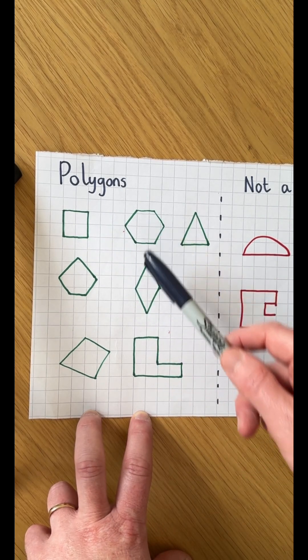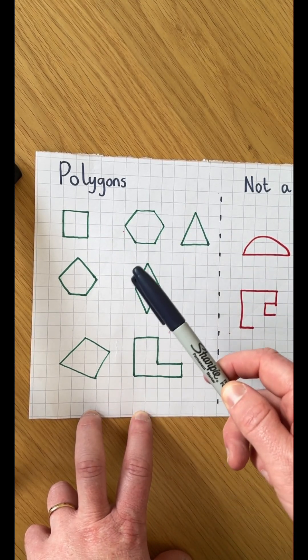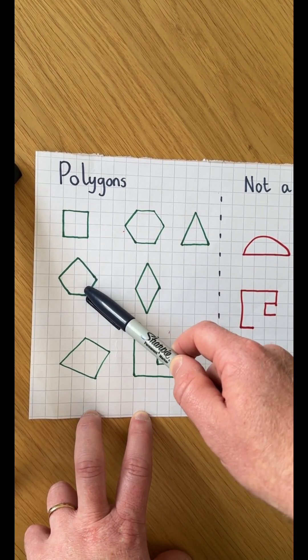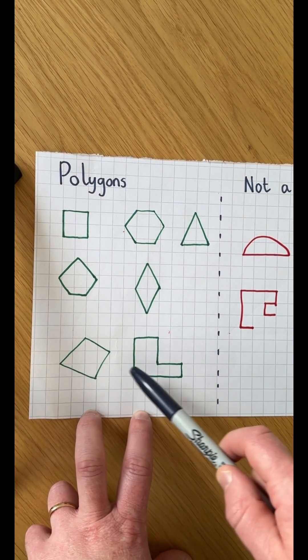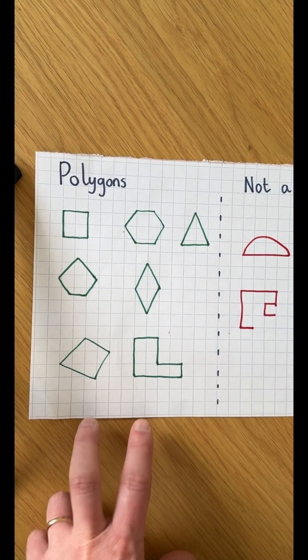A square, a hexagon, a triangle, a diamond—that's supposed to be a hexagon—and these irregular shapes all have straight sides.